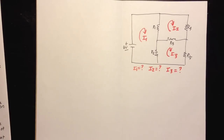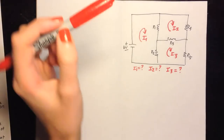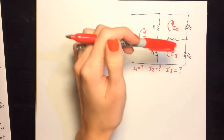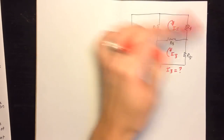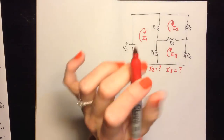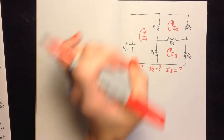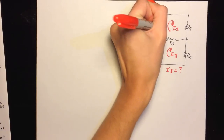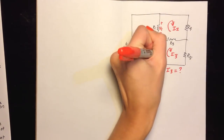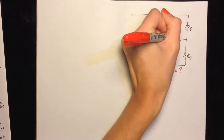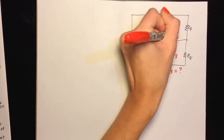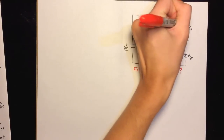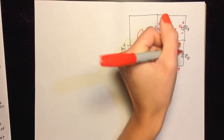Step three: assign voltages to each of the resistors in the mesh where KVL will be done. Since we don't know any of the currents for any of the meshes, we're going to be assigning voltages to every resistor. The polarity and names are arbitrary, but they must be given. So I'm just going to assign voltages to each resistor and call them V1, V2, V3, V4, and V5.